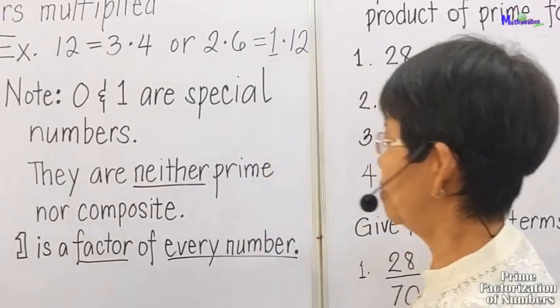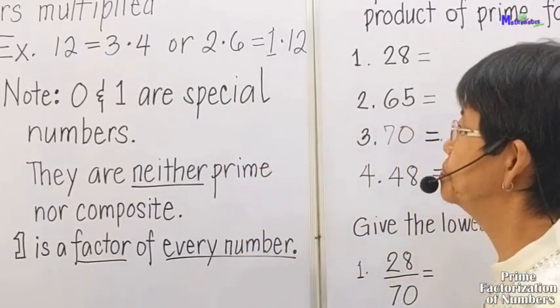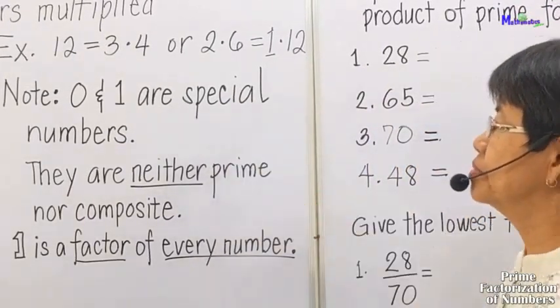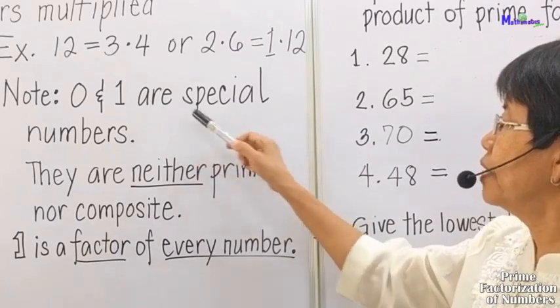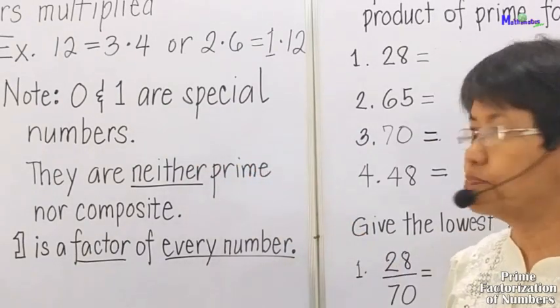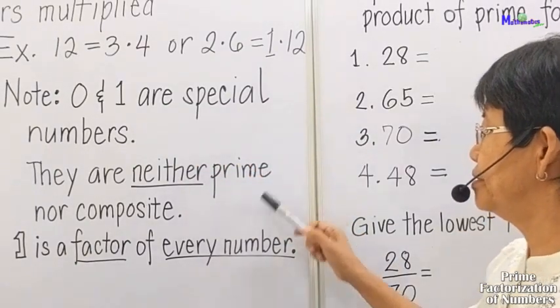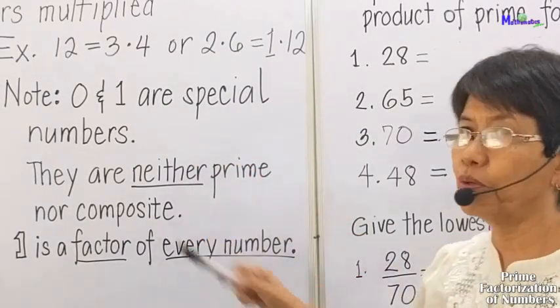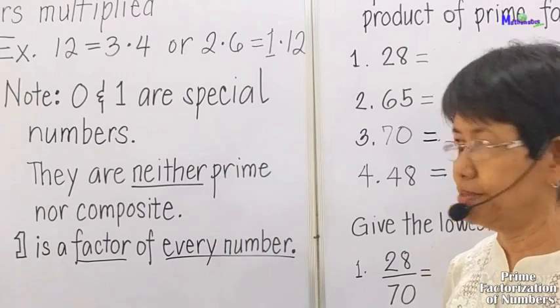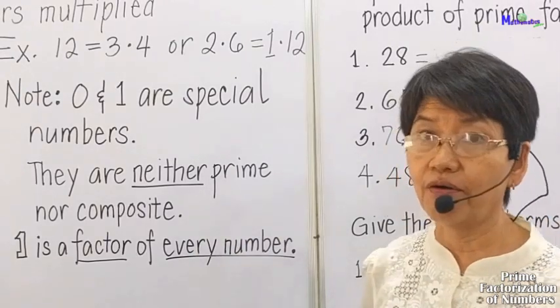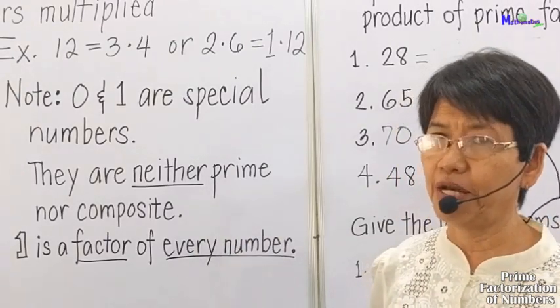Note that 0 and 1 are special numbers — they are neither prime nor composite. And 1 is a factor of every number.